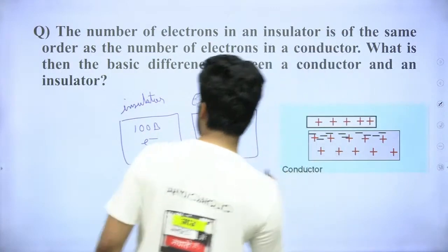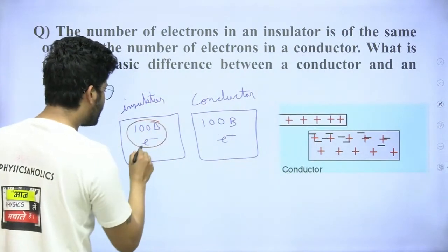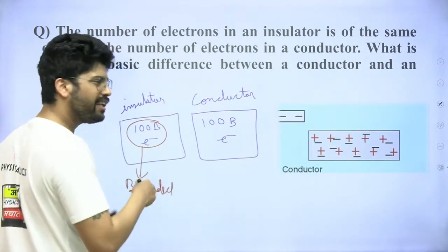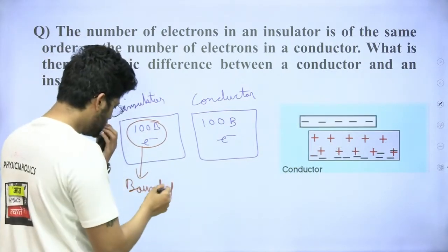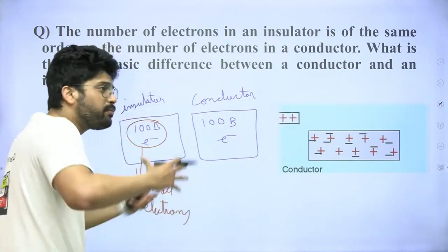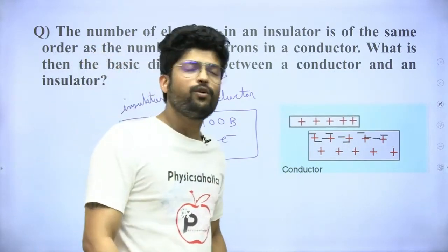then all of these are bounded. 100 billion to 100 billion bounded electrons. All of these are bounded electrons. They are not free to move.